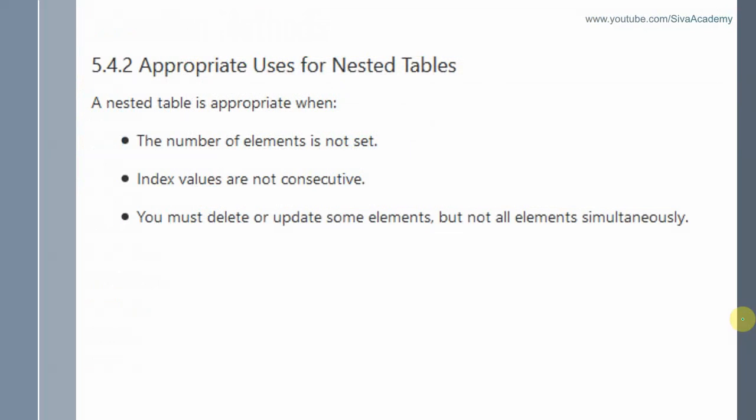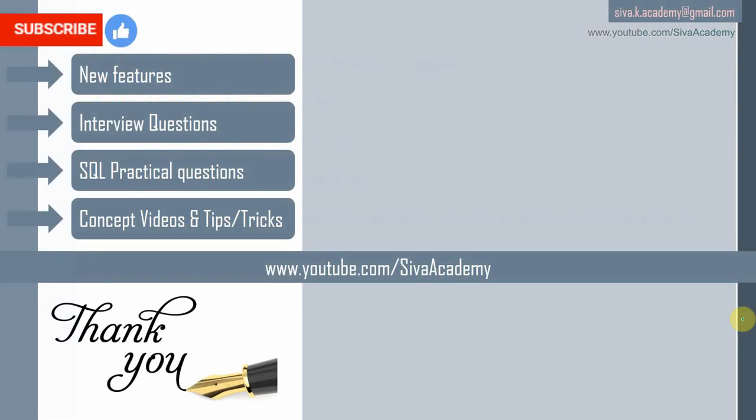Now that we know what a nested table is — since it can dynamically increase the number of elements — use it wherever you don't know the number of elements you are going to store. When you know the number of elements in advance, use varray; otherwise, go with nested table. Also, wherever you want a continuous collection, use varray; wherever you want to delete elements in between, prefer the nested table. If you learned something new, please like this video and subscribe for new feature videos, interview questions, and concept videos.